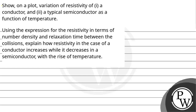Hello. Let's read this question. On a plot, show the variation of resistivity of first a conductor and a typical semiconductor as a function of temperature. The second part of the question is: using the expression for resistivity in terms of number density and relaxation time between collisions, explain how resistivity in the case of a conductor increases while it decreases in a semiconductor with the rise of temperature.